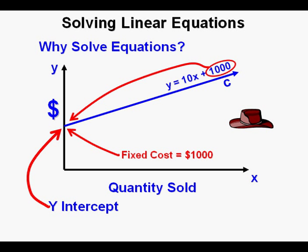The fixed cost might include things like the cost of designing the hat, buying specialized equipment to produce the hats, etc. Graphically, this cost is represented by a number on the y-axis. In algebraic vocabulary, we call this point of intersection at the y-axis the y-intercept.